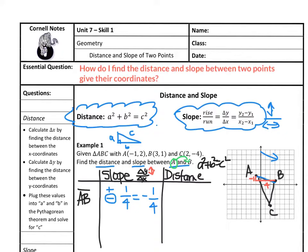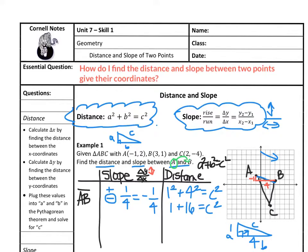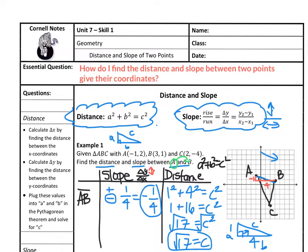For distance, what we've done is create a right triangle with one side as 1 and the other side as 4. We never want to use distance as negative — distances always have to be positive. So we plug in a equals 1 and b equals 4 to get 1 squared plus 4 squared equals c squared. That gives us 1 plus 16 equals 17 equals c squared. Taking the square root of both sides, the square root of 17 equals c. That's okay to leave as the exact value. So our slope is negative one-fourth and our distance is the square root of 17.